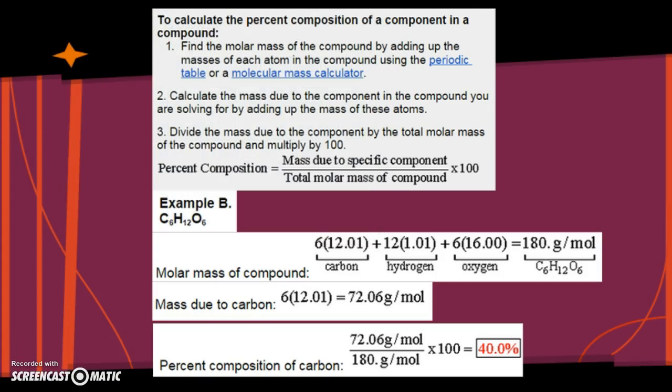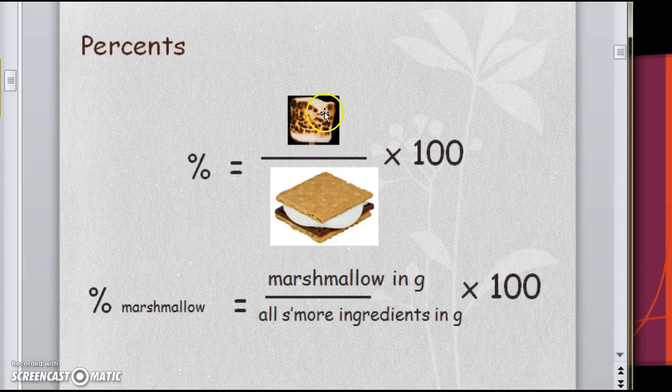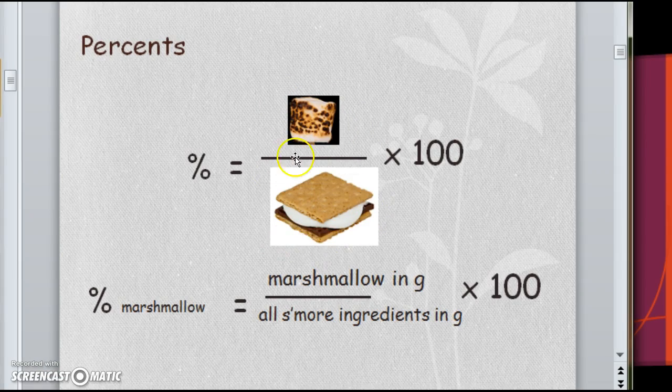Or, if it was money, we round to the pennies spot. Okay, that's it for percent composition. Remember, the whole idea is to think about what part are we looking for? How much does that part weigh? Divide it by how much the entire thing weighs. So, do the worksheet. Check your answers. As always, if you're having problems or need help, come see me. Good luck!